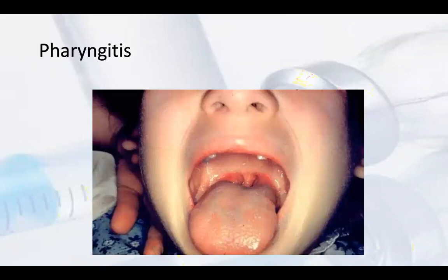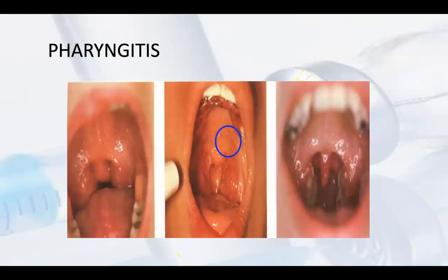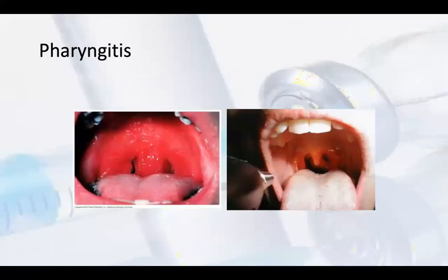In the pharyngitis pictures, you can see how the area is inflamed. The uvula is also inflamed when there is pharyngitis. In another picture, you can see how the uvula is close to the infection. The aggravated condition of the patient with sore throat and mouth inflammation is visible.